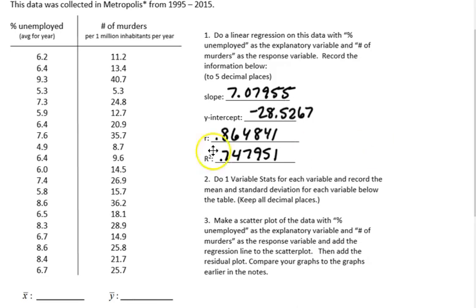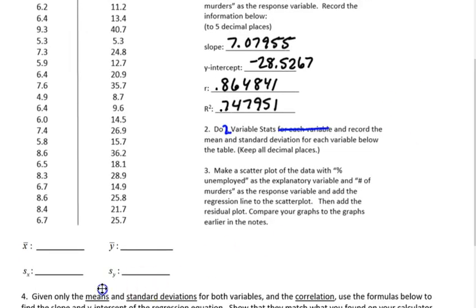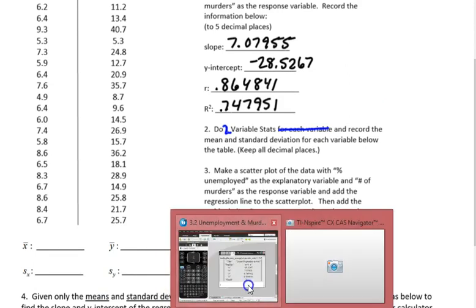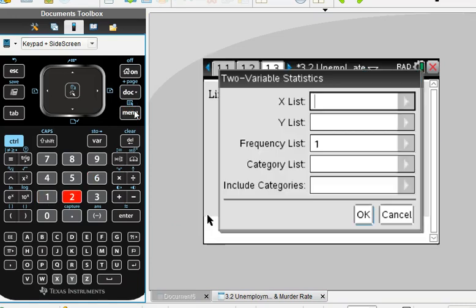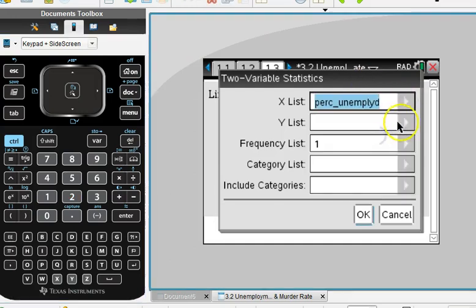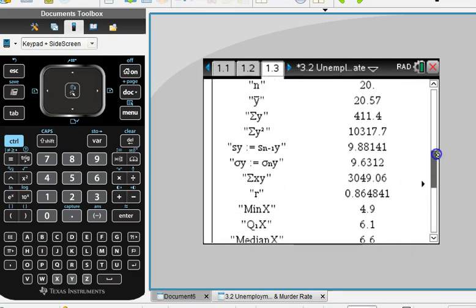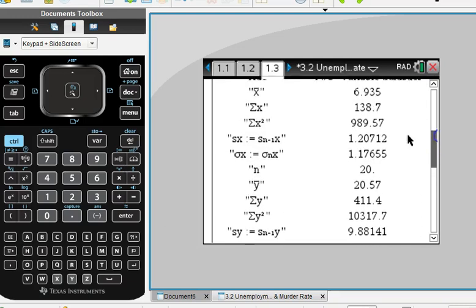Now I want to do something else with this data. I'm actually going to do two variable stats, which allows me to find the mean of the X and the mean of the Y variables in one step. So on the calculator page once again, we're going to go to menu 6, 1, and then number 2. My X list, I have percent unemployed, and the Y list, I have murder rate. You'll see then that we can find the mean of the X, standard deviation of the X. I'm going to use S of X, not sigma, so this is sample versus population, mean of Y, and standard deviation of Y.